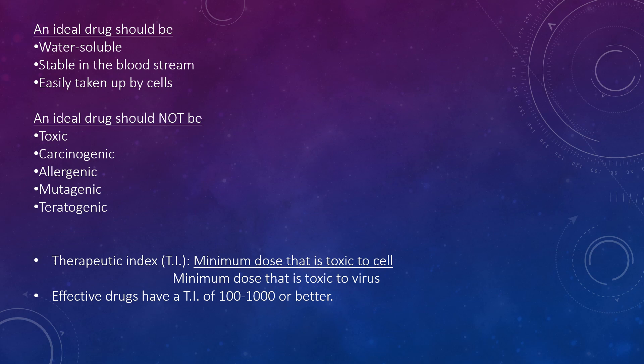An ideal drug should not be toxic, carcinogenic, allergenic, mutagenic, or teratogenic. Toxicity of an antiviral drug can be acceptable if there is no alternative, such as for asymptomatic rabies or haemorrhagic fever. Obviously, a good drug must show much more toxicity to the virus than the host cell. This is measured by the therapeutic index of the drug, which is calculated by the minimum dose that is toxic to the cell divided by the minimum dose that is toxic to the virus.